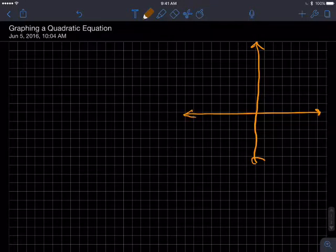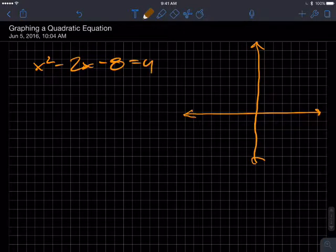Didn't realize it started. Here we go, graphing quadratic equation. So let's get one up here: x squared minus 2x minus 8 equals y.